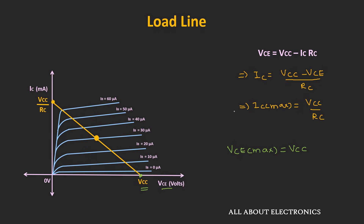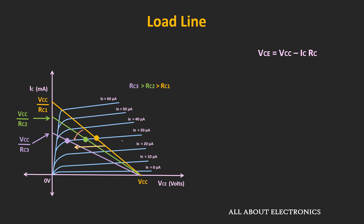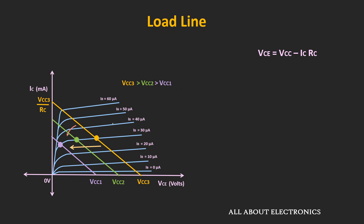If the value of IB is changed by varying Rb, then the Q point will also change. For the given values of Vcc and Rc, if IB is increased, the Q point will move upwards. Similarly, by keeping Vcc fixed, if we change the value of Rc, the load line will also change. Three different load lines are shown for different values of Rc. For a fixed value of base current, if the load line changes, the operating point will shift towards the left-hand side. Also, by keeping Rc fixed and changing the value of Vcc, the load line will shift accordingly, with different load lines shown for different values of Vcc.